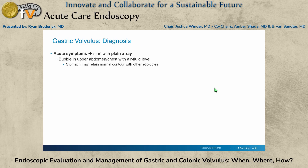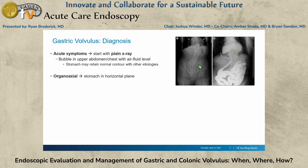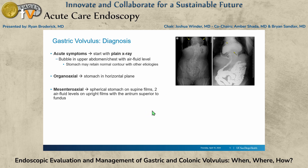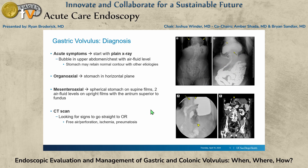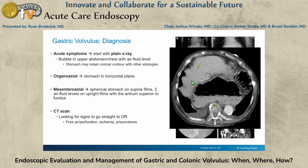Patients will come in and the workup starts in the ED, usually with a plain x-ray. You'll see the stomach bubble in a horizontal plane for the organoaxial, and a spherical type of bubble for the mesenteroaxial. Most of these patients are getting a CT scan, and you should be getting a CT scan looking for signs that would send you straight to the operating room — free air, perforation, pneumatosis, ischemia. You're looking for pneumatosis or any signs of perforation and patient instability.